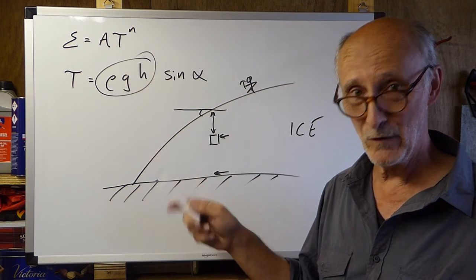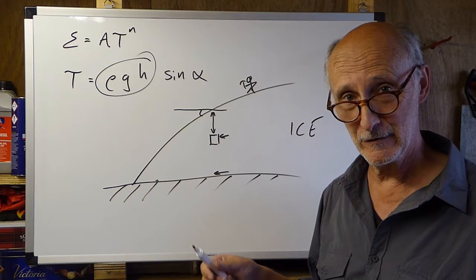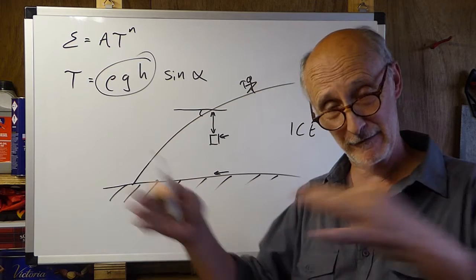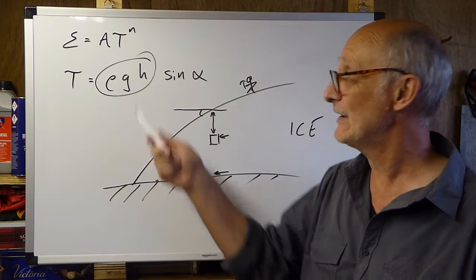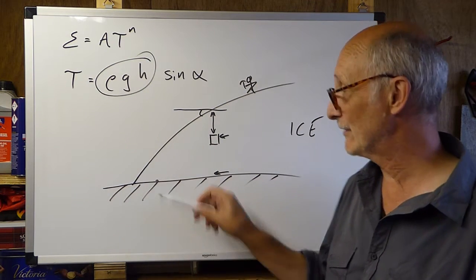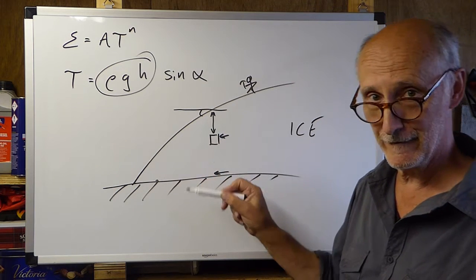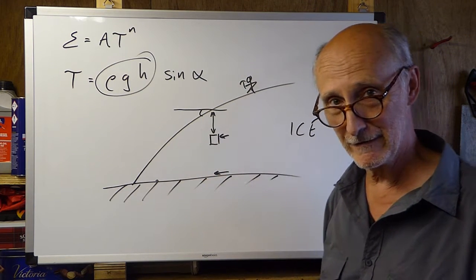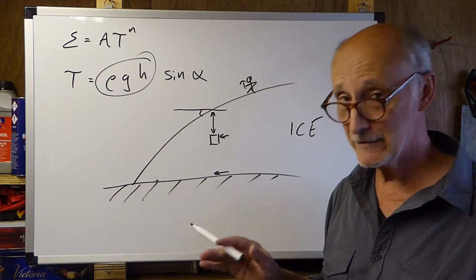We will come back to these equations later on when we start looking at how glaciers move and how the shape of an ice sheet, the surface profile of an ice sheet, relates to the movement, the dynamics, the bed characteristics, the surface characteristics, and the characteristics of the interior of the glacier.